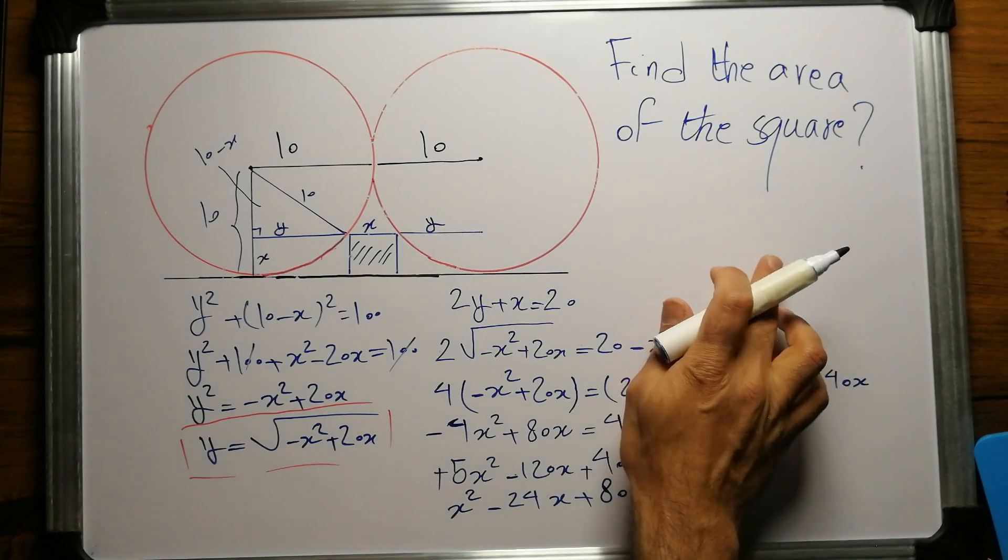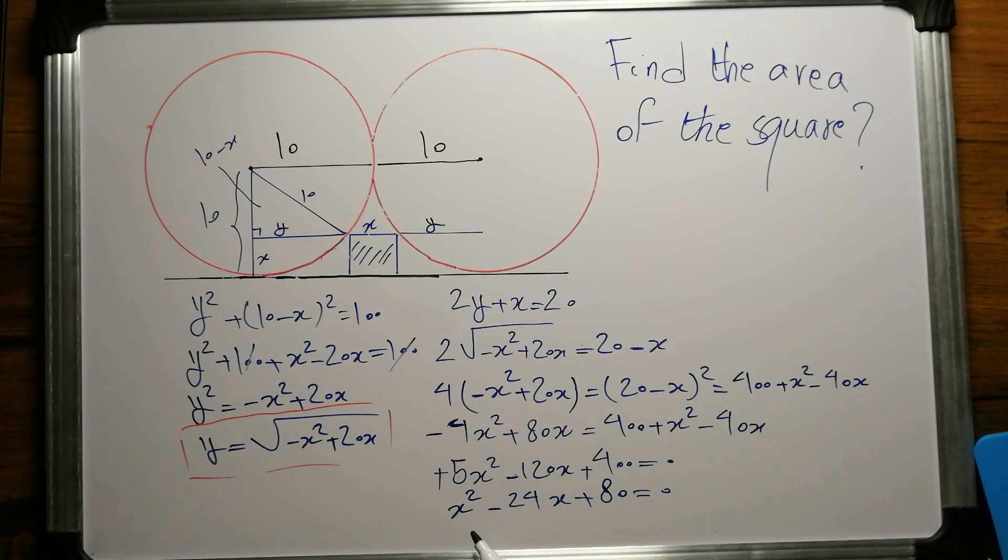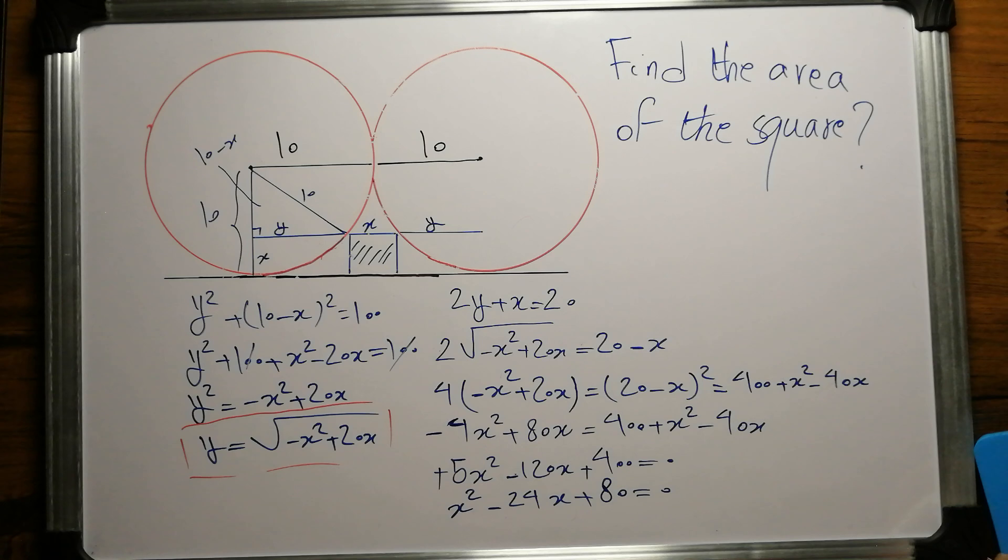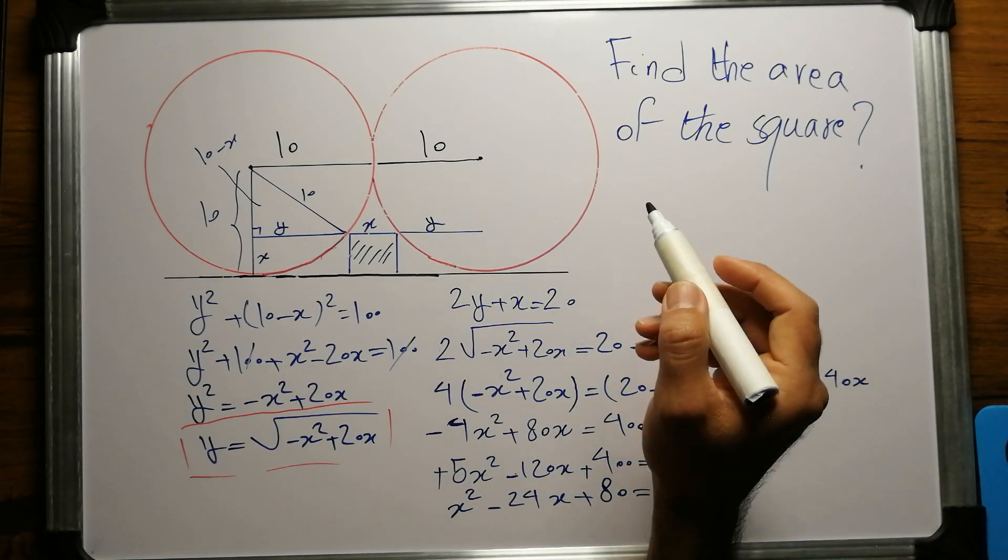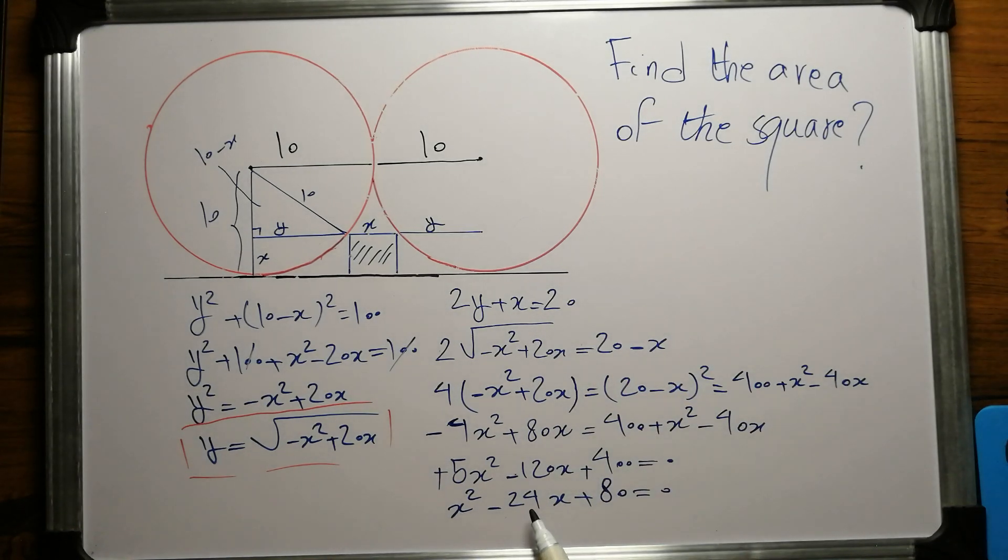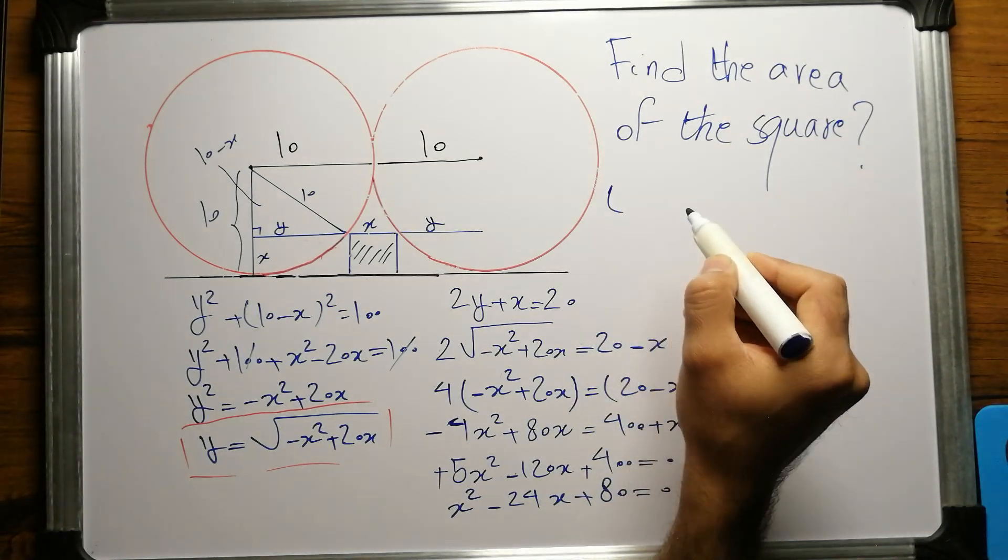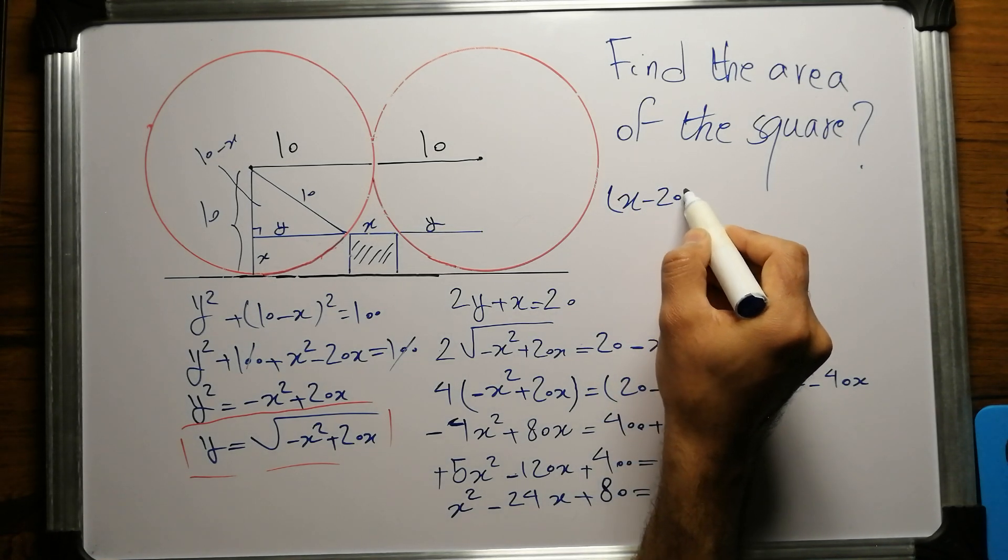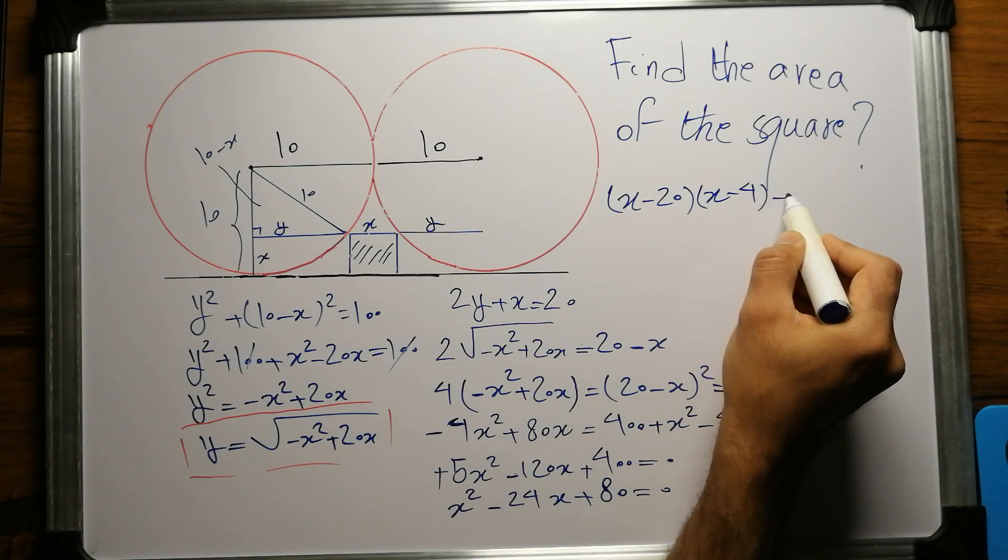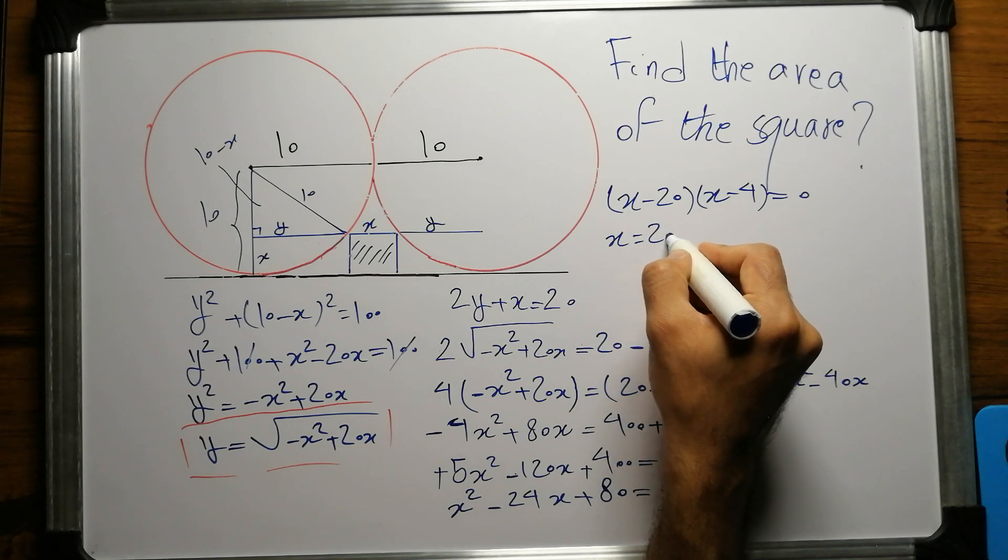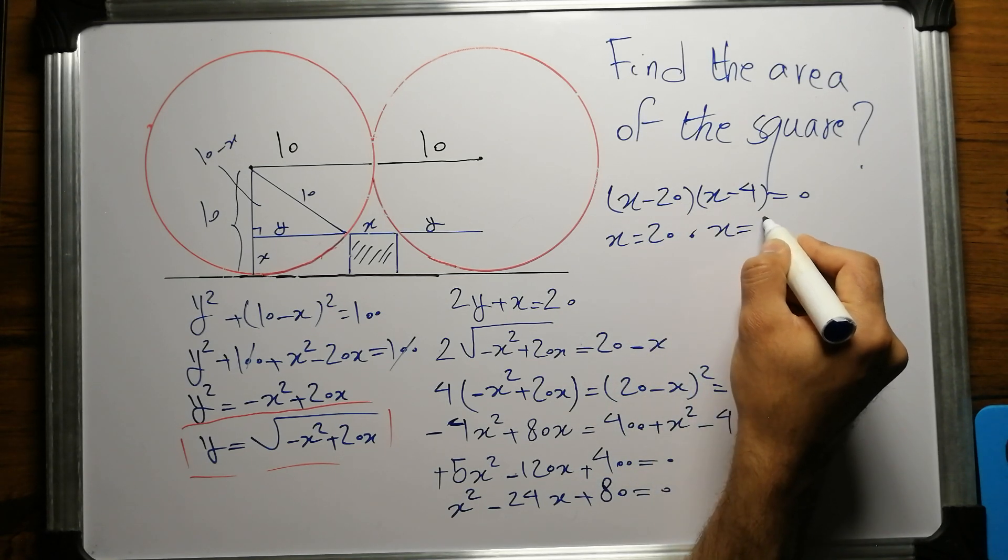That's a quadratic, and we can solve it using factoring. Two numbers whose sum is -24 and whose product is 80 - they both must be negative. -20 and -4: if we multiply them, that's 80; if we add them together, it's -24. So it is (x - 20)(x - 4) = 0. Either x = 20 or x = 4.